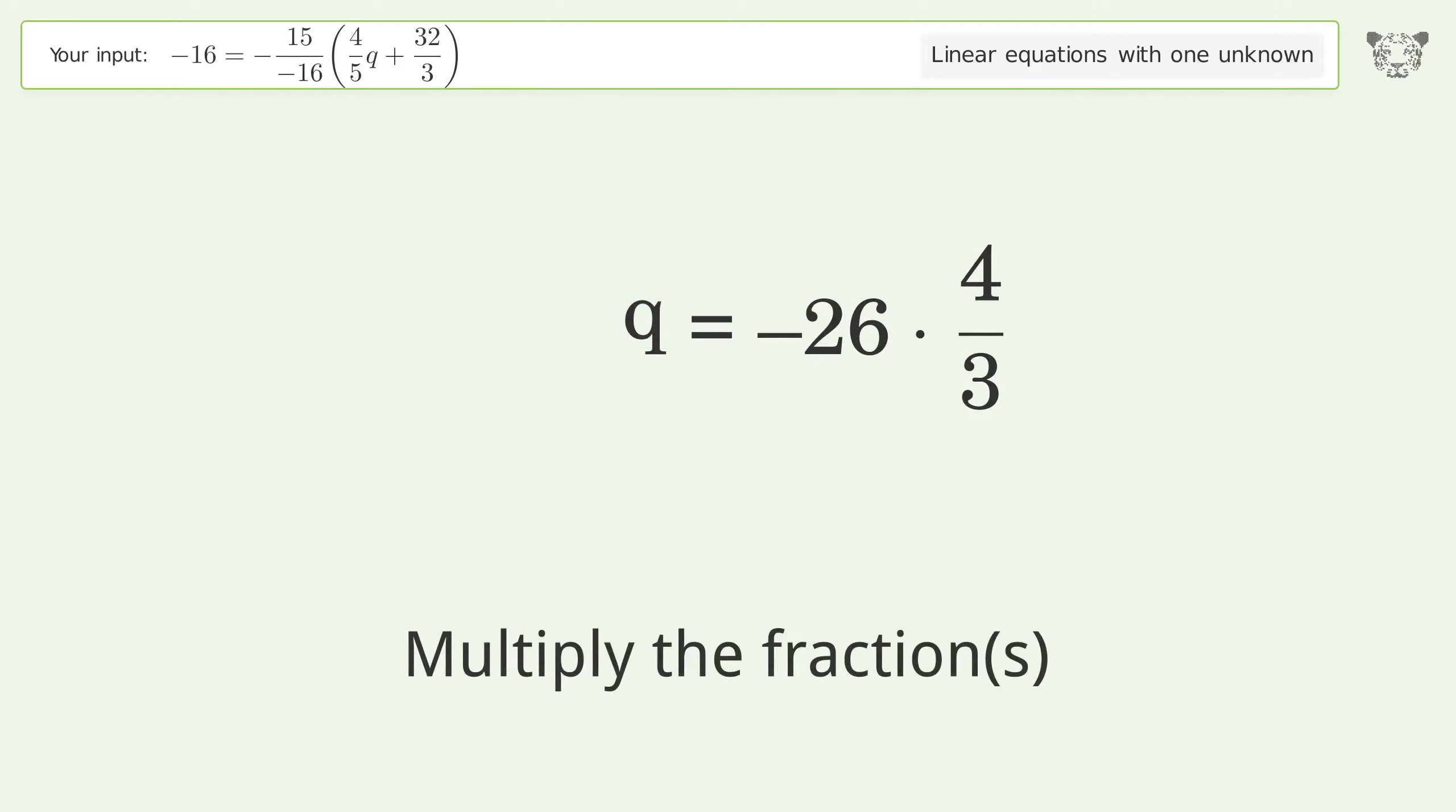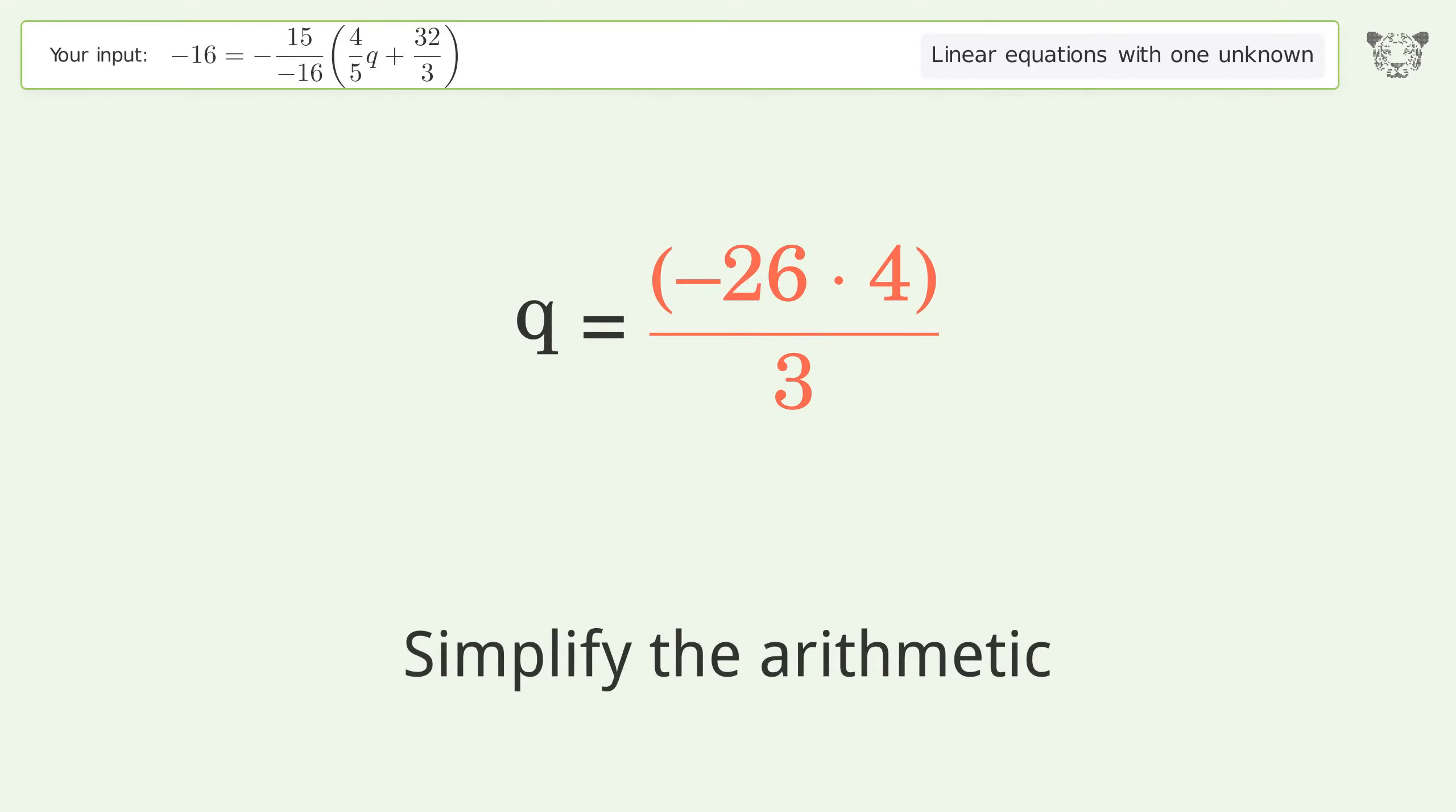Multiply the fractions. Simplify the arithmetic. And so the final result is q equals negative 104 over 3.